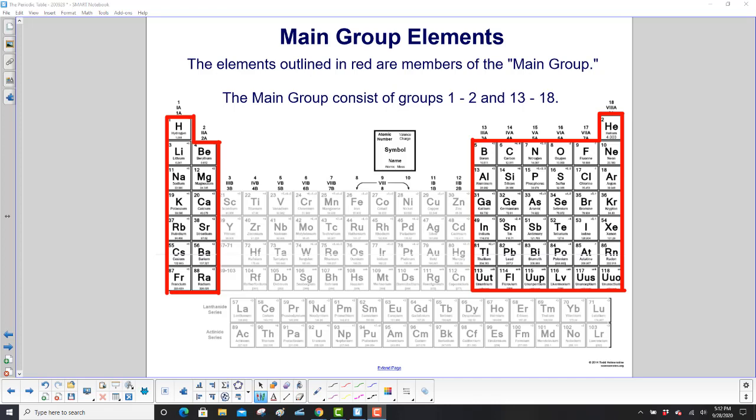We'll be discussing the main group elements first. The elements outlined in red are members of the main group. They consist of groups 1 and 2, and then 13 through 18.